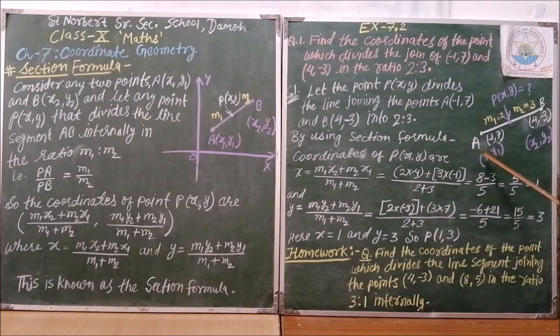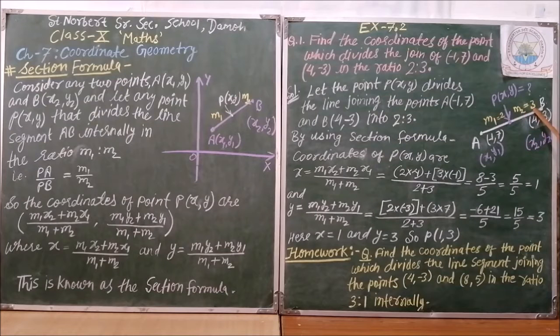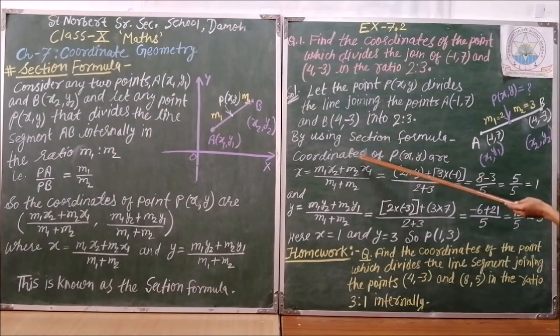Here, they have given two points. Let it as A minus 1 comma 7 and B 4 comma minus 3 and ratios are given 2 ratio 3. That means M1 is 2, M2 is 3. Now, we have to find coordinates of P. So, we will use section formula for coordinates of P.